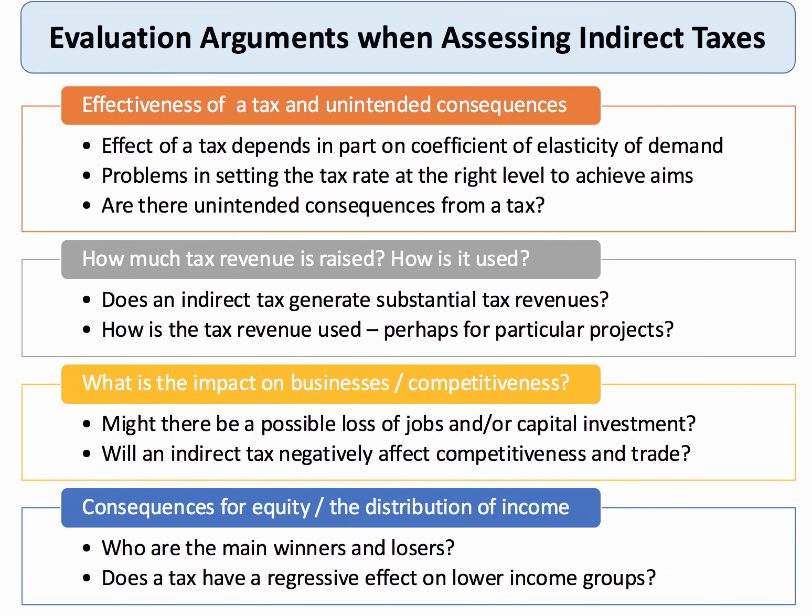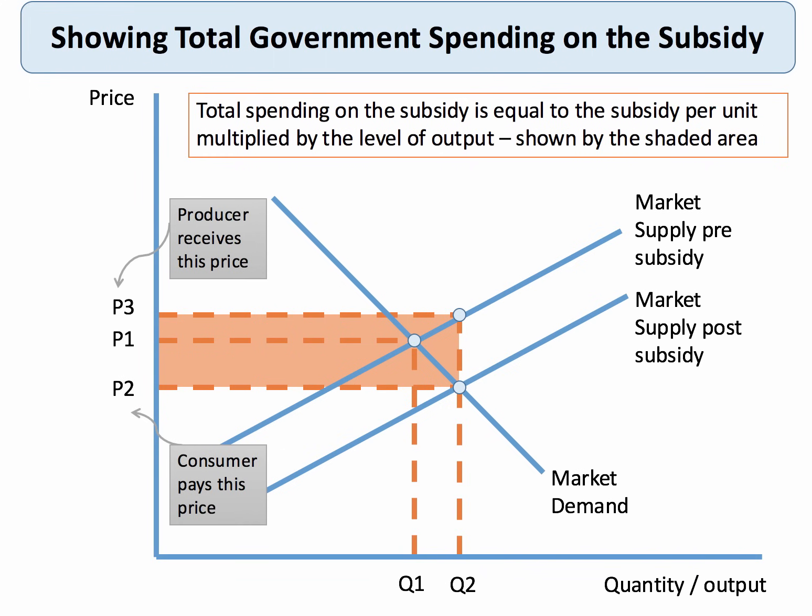So effectiveness, revenue, competitiveness, and fairness are some of the ways to evaluate a tax. You should also think about alternatives — a tax may not be the best policy. Now let's move on to subsidies.